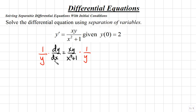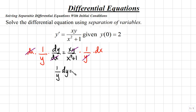Also, we'll multiply both sides by dx so that we can get expressions containing x on the right side. By doing this, the y's on the right side will cancel, and the dx's on the left will cancel. We're left with 1 over y dy equals x over x squared plus 1 dx. We now have all variables containing y on the left side, and all variables containing x on the right side.